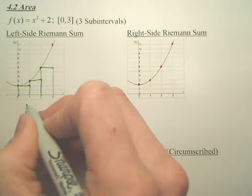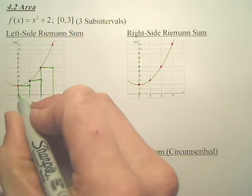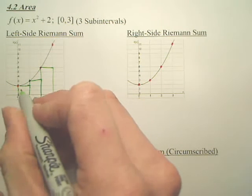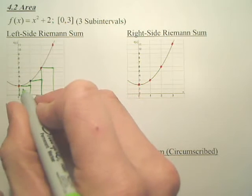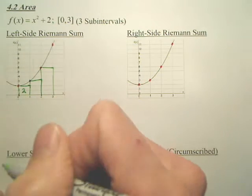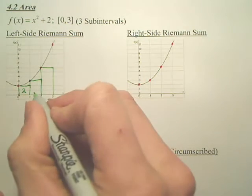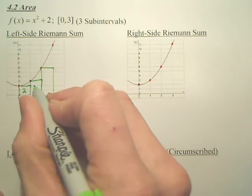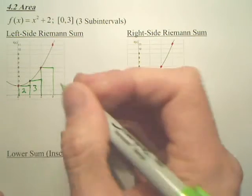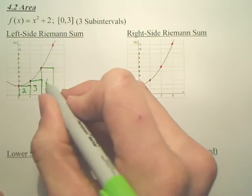So, what's the area of the first box? Well, can you tell that's a width of 1, a height of 2? So, that is 2. What's the area of the next box? 3. And the area of the third box is 6.